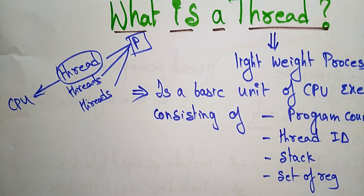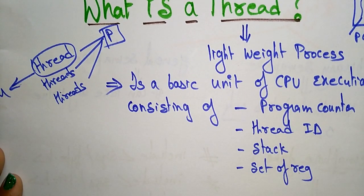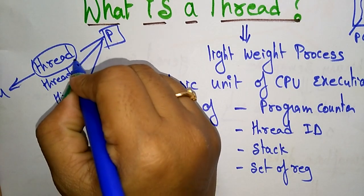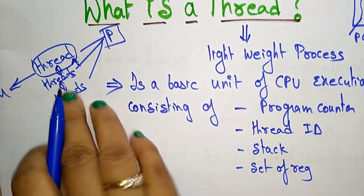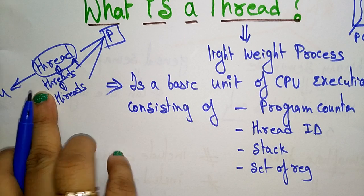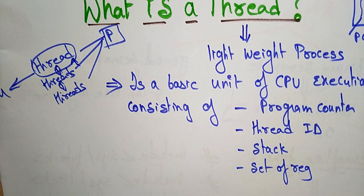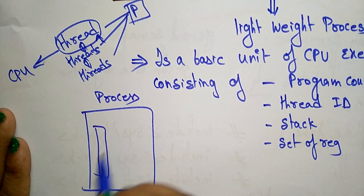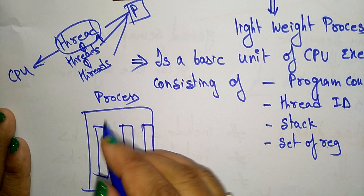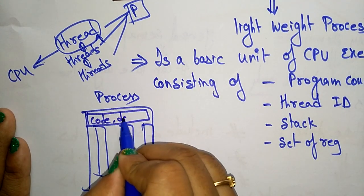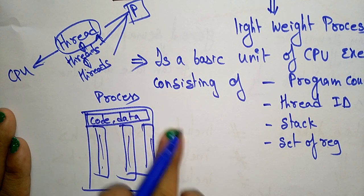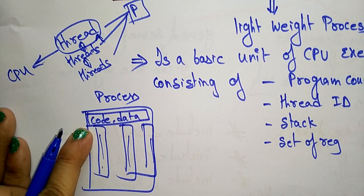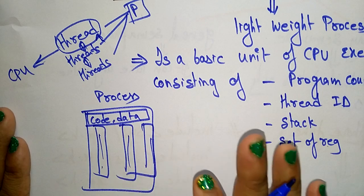A thread is a basic unit of CPU utilization consisting of a program counter, thread ID, stack, and set of registers. A thread shares with other threads in the same process its code section, data section, and other operating system resources. All threads use the same code and data sections, and other OS resources like files and signals are also shared.